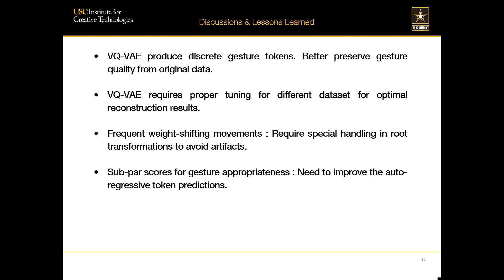Third, for full body motion synthesis, the result we produce has a lot of weight-shifting movements that look like artifacts. This may require special handling of root translation and rotation to avoid this. Right now we just concatenate all poses together and treat root transformation the same as all other joints, which might be the reason for this artifact. Finally, in the human evaluation, the score for gesture appropriateness is still below average, meaning there is still a lot of room to improve the token prediction. Although the VQVAE can reconstruct gestures well, we still need to predict the token sequence well so it aligns with the input speech.